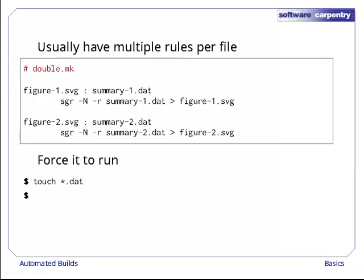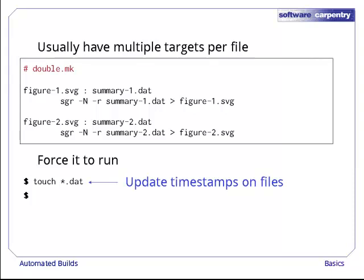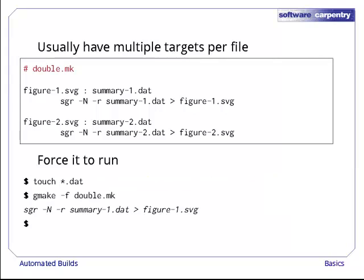Let's pretend we've just updated our data files by running touch star.dat. The Unix touch command doesn't change the contents of files, but updates their timestamps as if they had been modified. Now, when we run make, it recreates figure1.svg again, and then stops. Why wasn't figure2.svg recreated?